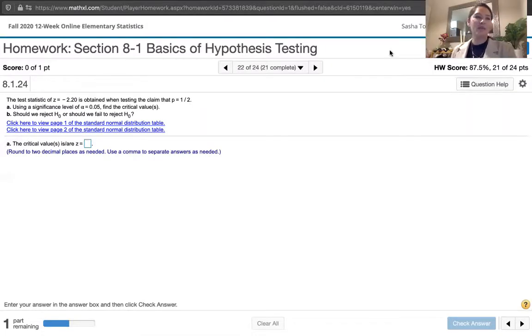In this video, we solve problem 8.1.24 from Essentials of Statistics, 6th edition by Mario Triola. The problem statement says the test statistic of Z equals negative 2.20 is obtained when testing the claim that P is equal to one half.